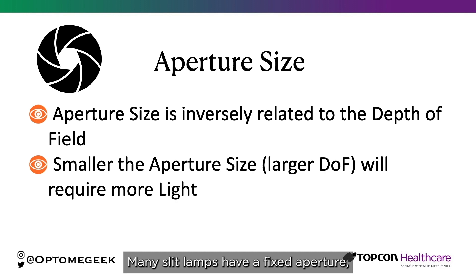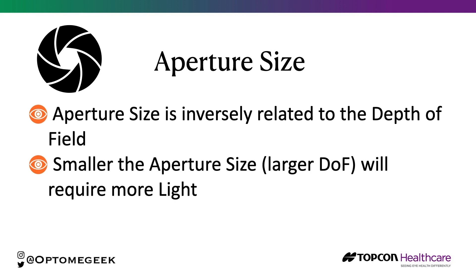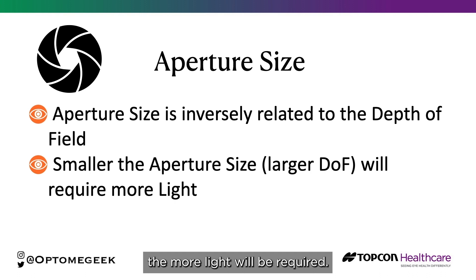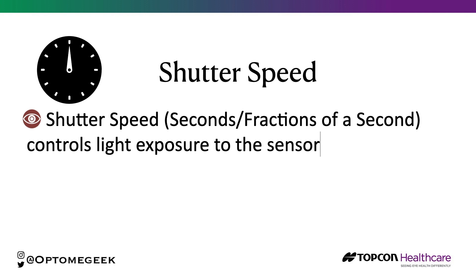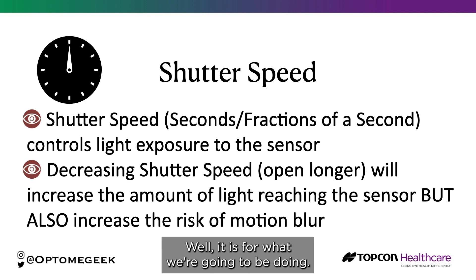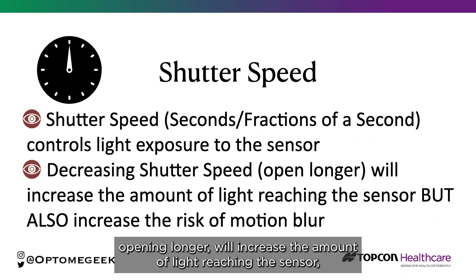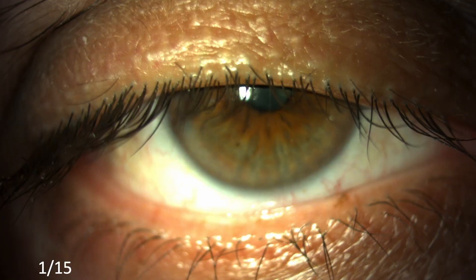Many slit lamps have a fixed aperture, so in general we don't need to worry about this too much. But the smaller the aperture size, the more light will be required. Shutter speed is akin to blink speed and is mostly measured in fractions of a second. Decreasing the shutter speed — opening longer — will increase the amount of light reaching the sensor, but this also increases the risk of motion blur.